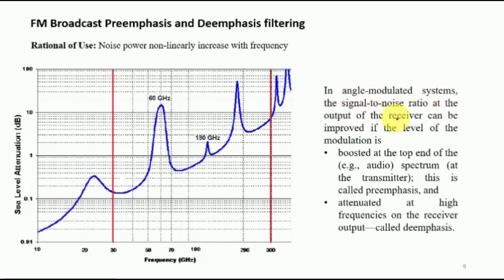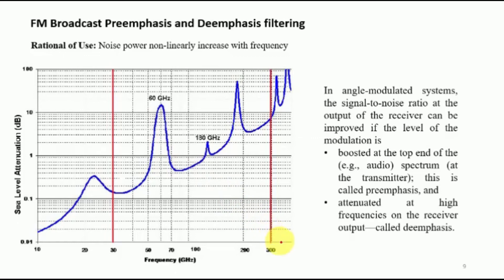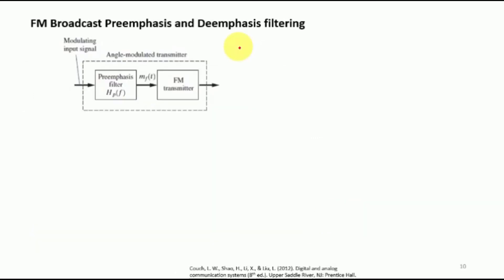Specifically for angle-modulated systems, the same procedure applies. The signal-to-noise ratio at the output of a receiver can be improved if the level of modulation is boosted at the top end of the audio spectrum at the transmitter. Just before the transmitter, a high-pass filter is implemented that passes low-frequency content at unity gain while emphasizing high-frequency content. On the receiver side, a low-pass filter captures low frequencies at unity gain while attenuating high frequencies.